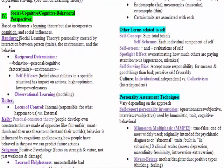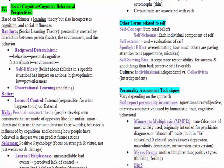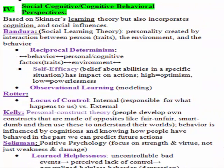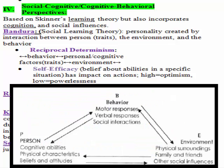Branching off from the behavioral perspective is the social cognitive — or cognitive behavioral — approach, and those terms are used relatively interchangeably. Albert Bandura is the first theorist here, and he looked at social learning theory. He says our personality is created by the interaction between the person, the environment, and behavior. This is known as reciprocal determinism, or triadic reciprocity, meaning our actions are determined by the interaction of our environment and our cognitive processes.